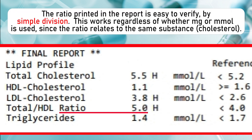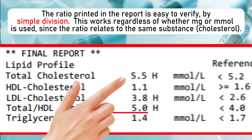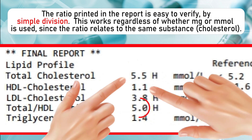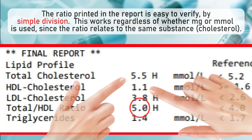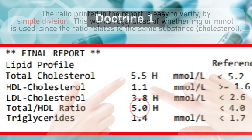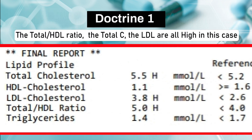The ratio printed in the report is easy to verify by simple division. This works regardless of whether milligrams or millimoles are used by the lab, since the ratio relates to the same substance — cholesterol. In this case, the ratio, the total cholesterol, and the LDL are all high.